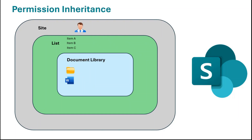That means if a user has owner permission on a site, or is part of the site owners group, that user will have owner permission on that SharePoint site, on the list, on the list items, on the document library, and on the files and folders within the document library. Similarly, if a user is part of the site members group, he will have edit permission on the site, on the list, and on items within the document library. This is called permission inheritance.